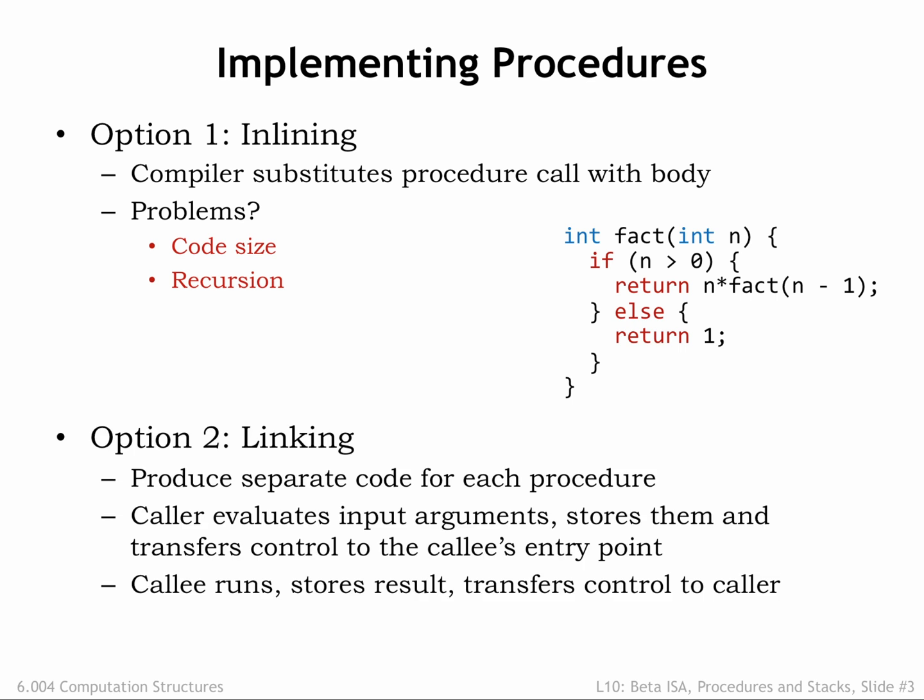A second option is to link the procedure. In this approach, there is a single copy of the procedure code which we arrange to be run for each procedure call. All the procedure calls are said to link to the procedure code. Here the body of the procedure is translated once into beta instructions, and the first instruction is identified as the procedure's entry point. The procedure call is compiled into a set of instructions that evaluate the argument expressions and save the values in an agreed-upon location. Then we'll use a branch instruction to transfer control to the entry point of the procedure. Recall that the branch instruction not only changes the program counter, but saves the address of the instruction following the branch in a specified register. The saved address is the return address where we want execution to resume when the procedure execution is complete. After branching to the entry point, the procedure code runs, stores the result in an agreed-upon location, and then resumes execution of the calling program by jumping to the supplied return address.